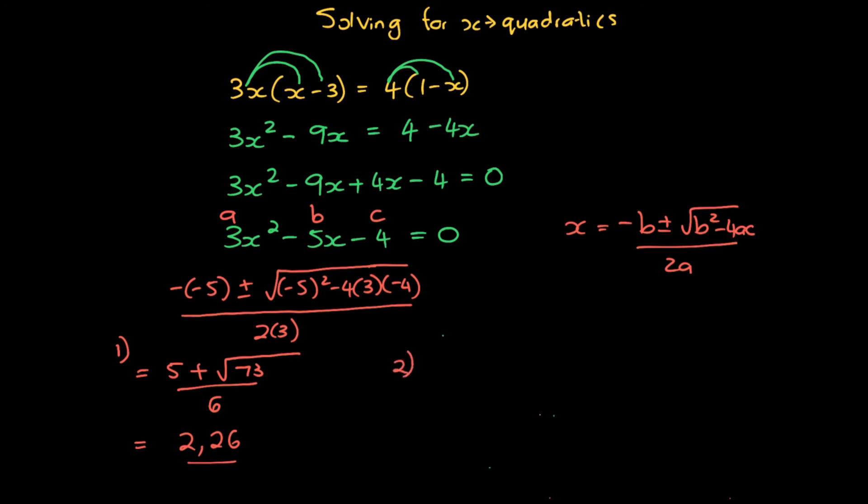The second answer that we have is going to be, remember the one with the minus, so it's going to be 5 minus square root of 73 over 6. And you can calculate that for me.